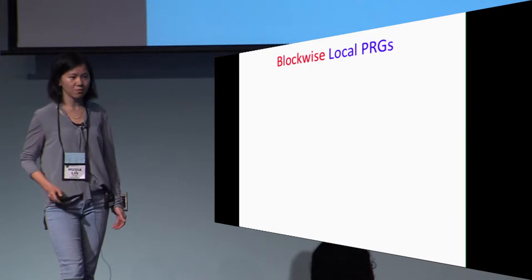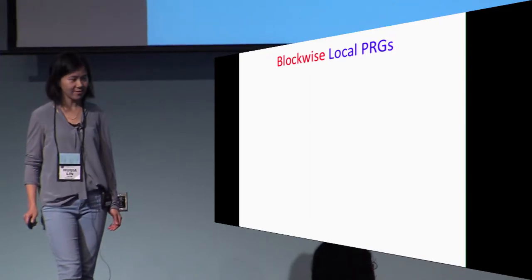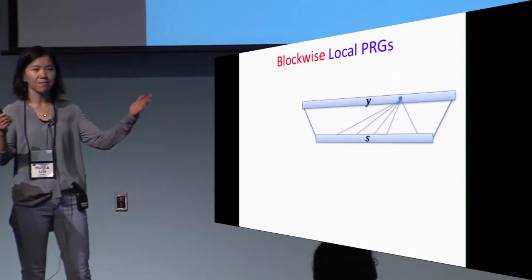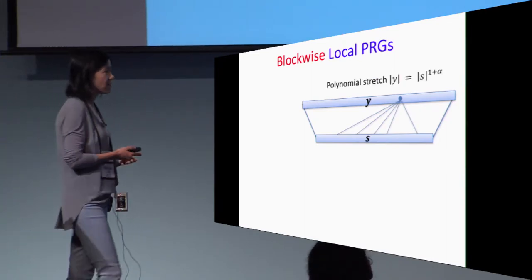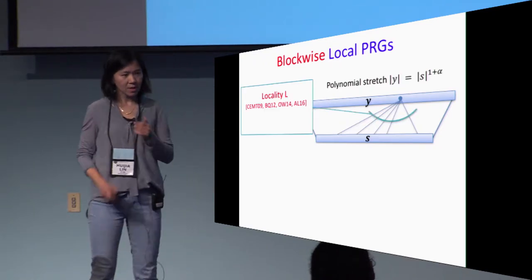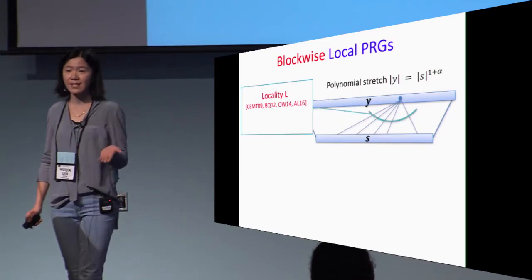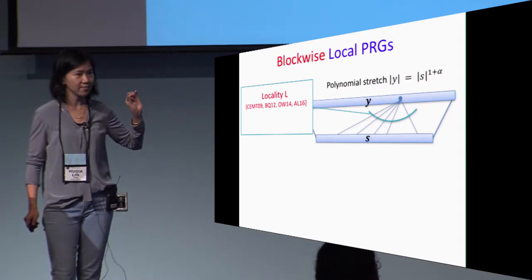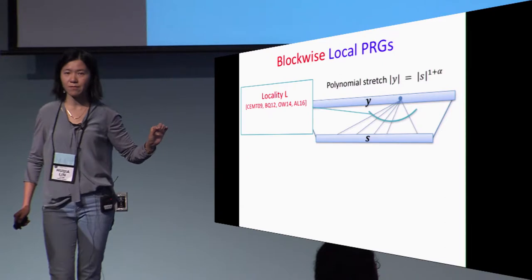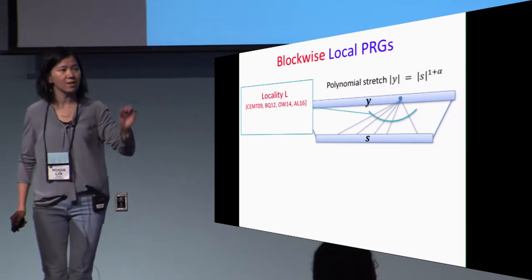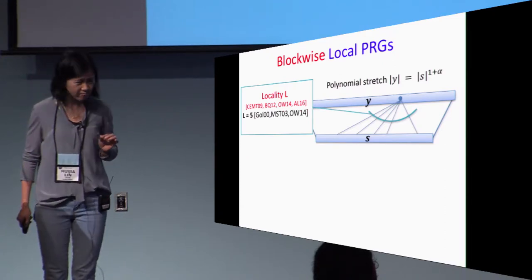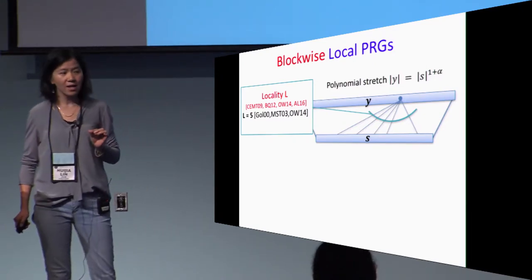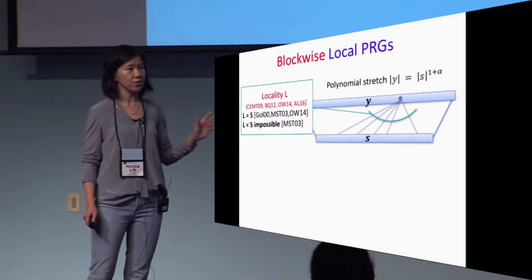So what are those blockwise local PRGs? First, let us recall local PRGs. They allow us to expand the seed towards pseudo-random output which is predominantly longer. We say a function has locality L if each individual output bit depends on at most L input bits. There has been a long line of research studying what is the lowest locality we need for PRGs. Currently, for locality 5 we have candidate constructions, but for locality 4 they do not exist.